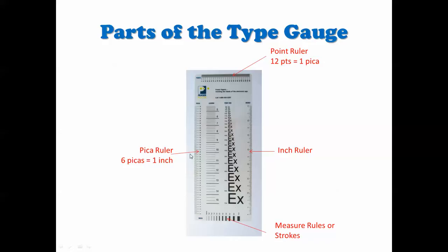Okay, on this side is the inch ruler and at the top is the point ruler. And remember, 12 points equal one pica and 72 points equal one inch, so these are pretty small measurements.